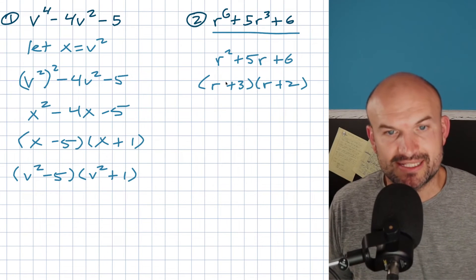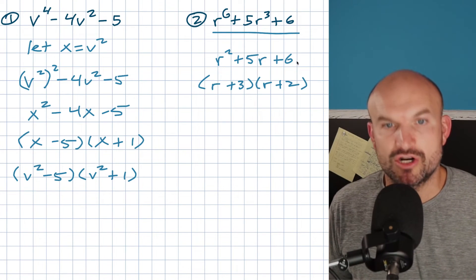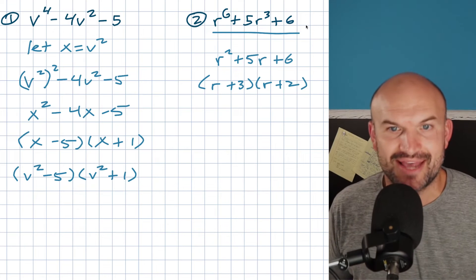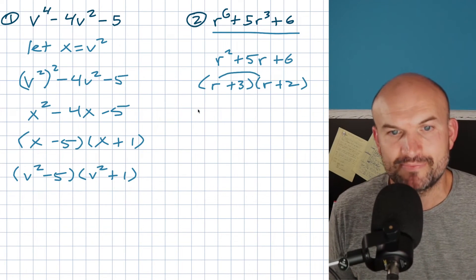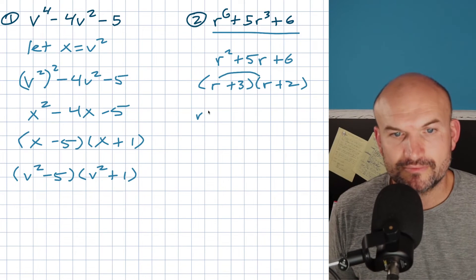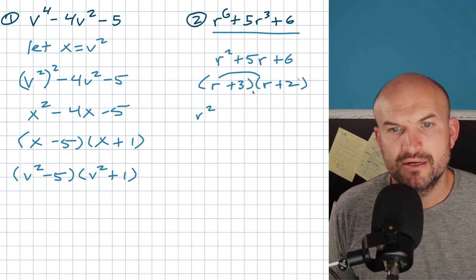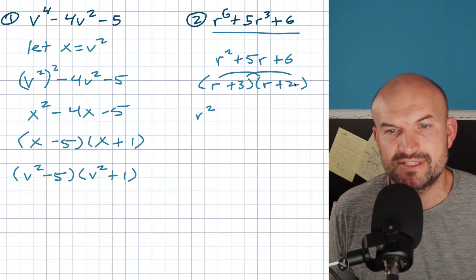Now, obviously, if you were to multiply this out, r times r is going to give you r squared. We don't want r squared. Also, when you find your middle terms, let's multiply this out because I want to show you something. When you do multiply this out, you're going to get r squared, and then 3 times 2 is going to give you 6.